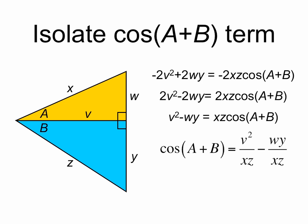At this point we'll divide both sides by xz, leaving us cosine of a plus b equals v squared over xz minus wy over xz.